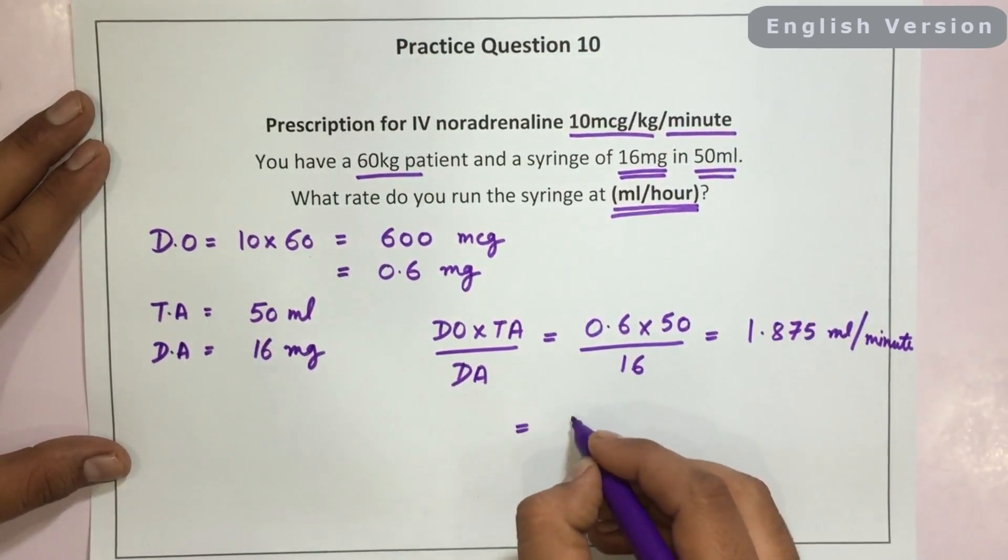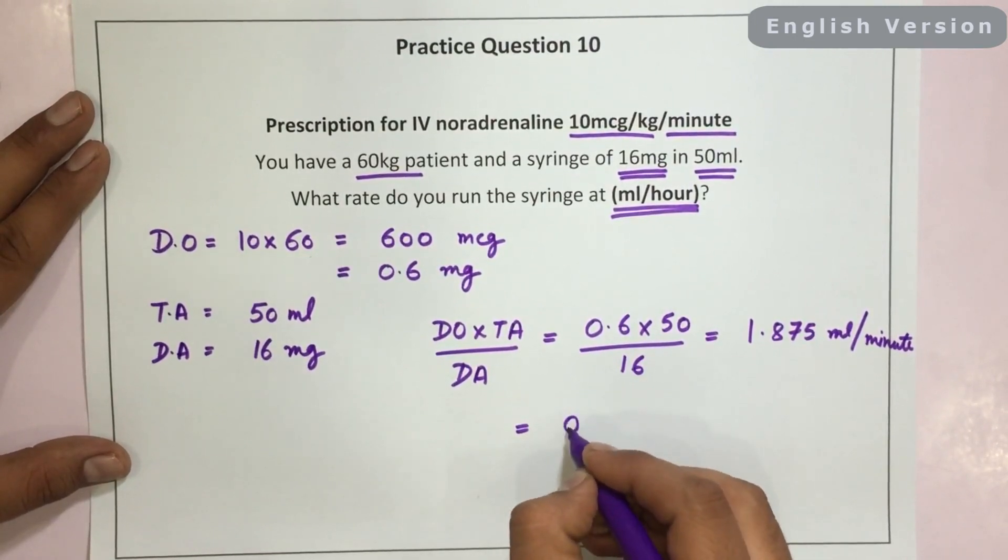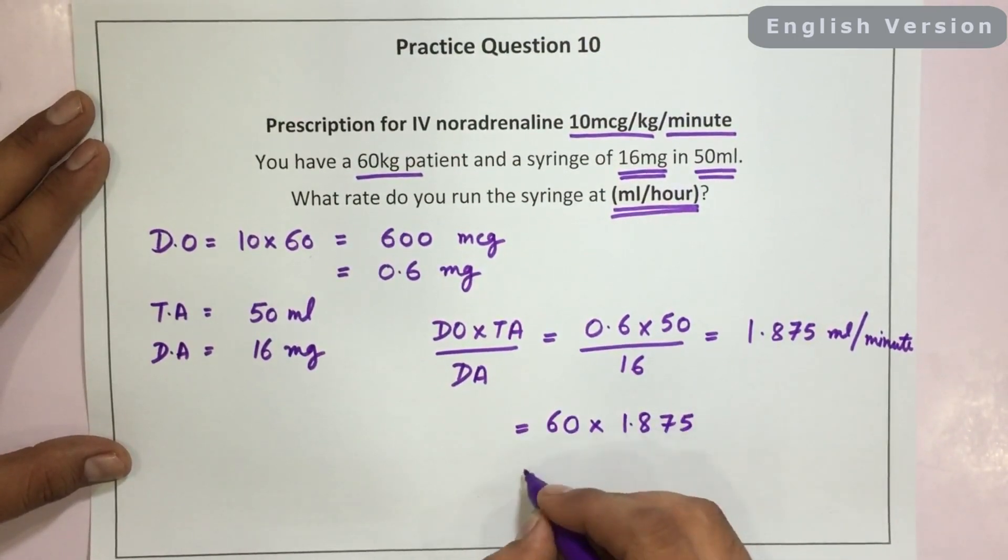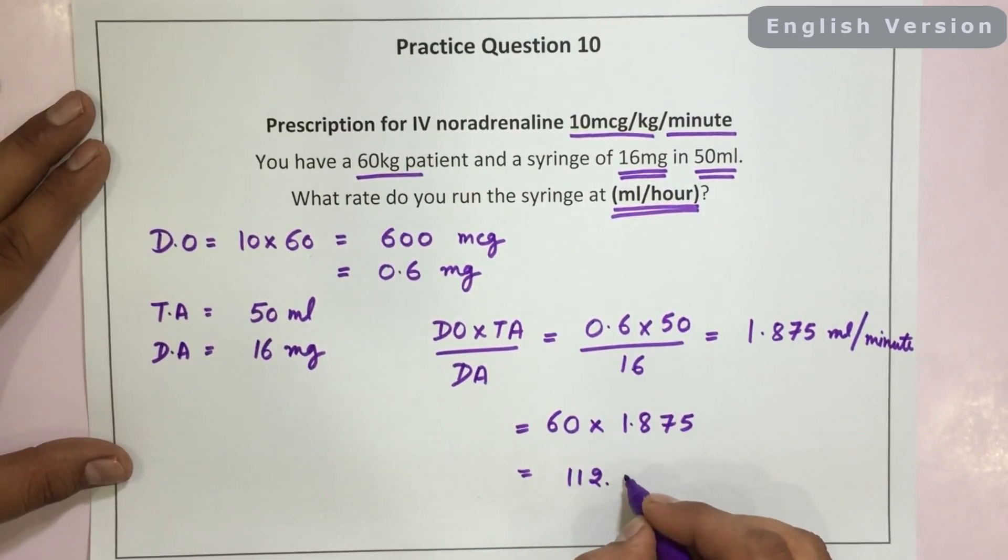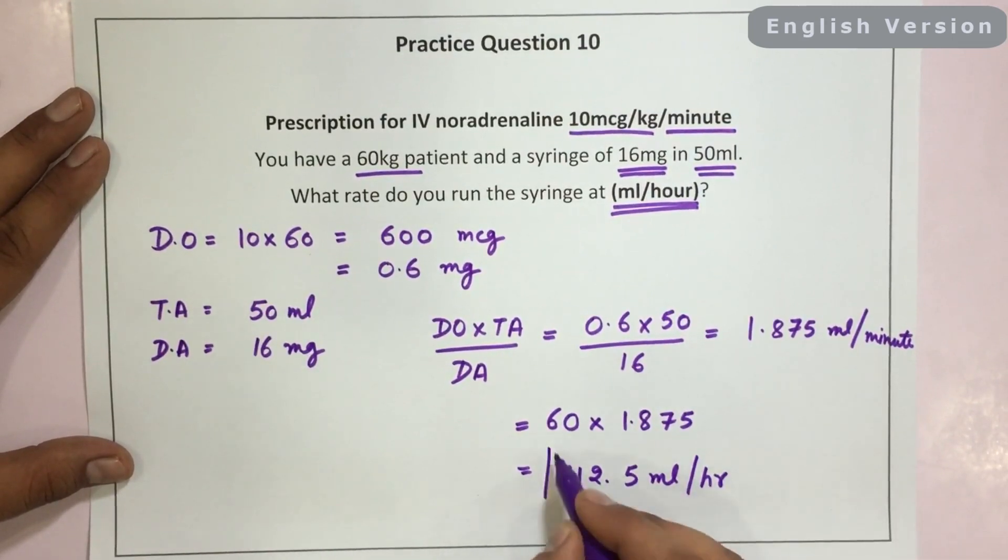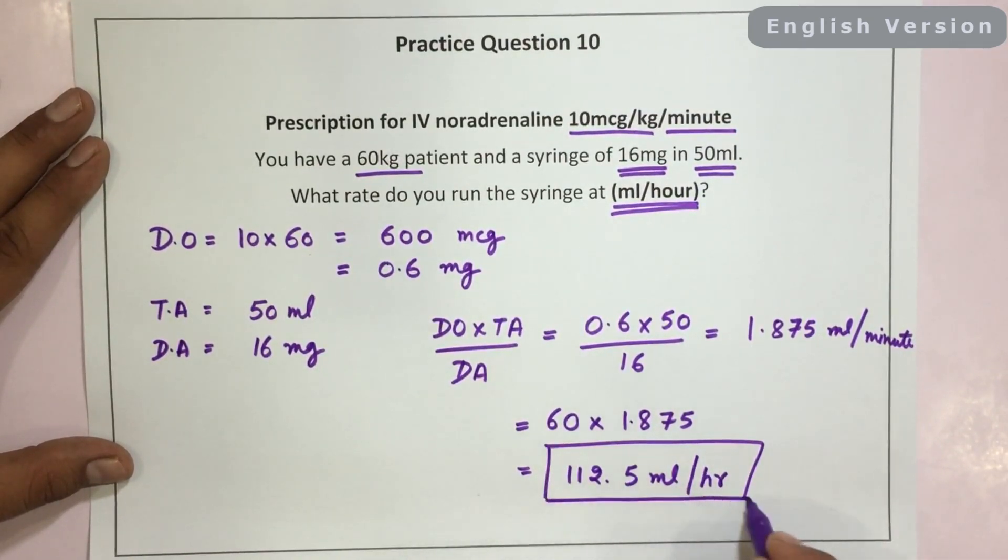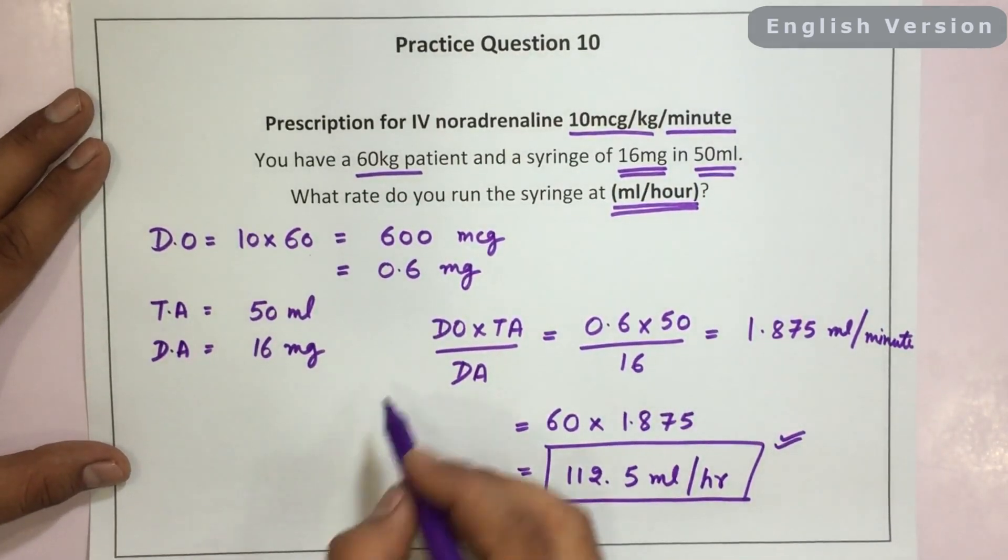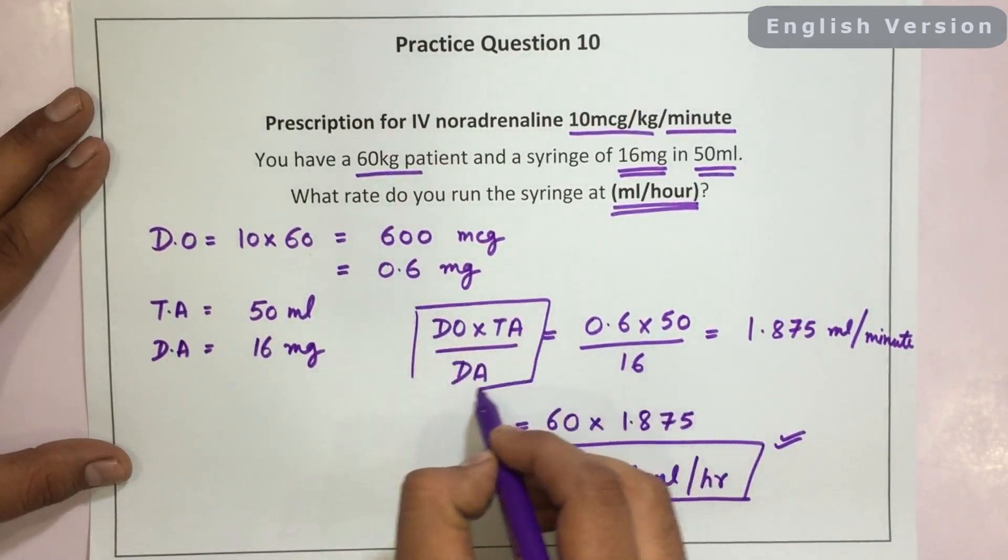So we need to convert it into hours. We need to multiply it with 60. It will come as 112.5 ml per hour. This would be the correct answer. All right, so always remember this formula.